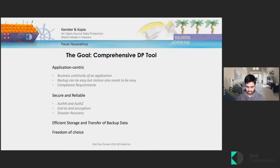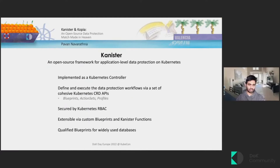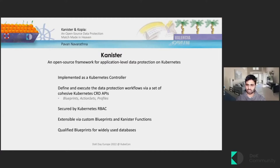So does such a tool exist? Absolutely — it does in the form of a combination of two open source projects, Canister and Copia. Canister is an open source framework purpose-built for application-level data protection on Kubernetes. It is mainly implemented as a Kubernetes controller based on the operator pattern. We can define and execute database or application-specific workflows using a set of Kubernetes CRDs. The workflows are defined in blueprints and executed using action sets. Profiles are used to define the storage targets used to store the backups.